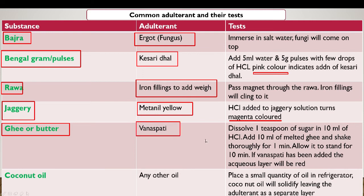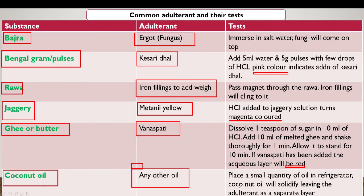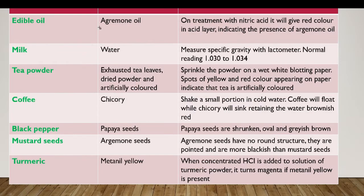Vanaspati ghee is added to butter ghee, which leads to indigestion. To test this adulterant, dissolve one teaspoon of sugar in 10 ml of HCl, add 10 ml of melted ghee and shake thoroughly for one minute, then allow it to stand for 10 minutes — if vanaspati has been added, the lower layer will turn red. For coconut oil, addition of any other oil can be detected by placing a small quantity in a refrigerator — coconut oil will solidify, leaving the adulterant as a separate layer.